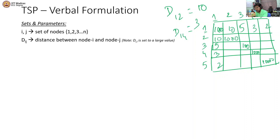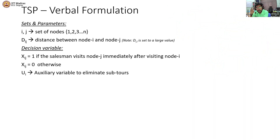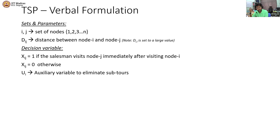So those are the sets and parameters required for solving the Travelling Salesman Problem. Next comes the decision variable — the variables we will have to find. We need to say whether the salesman goes from location i to location j immediately. If the salesman visits node j immediately after visiting node i, then the value for variable x(i,j) is 1, else it is 0. It is a binary variable — 1 or 0. There is also an auxiliary variable u(i), whose purpose will become clear when I describe the sub-tour elimination constraints.